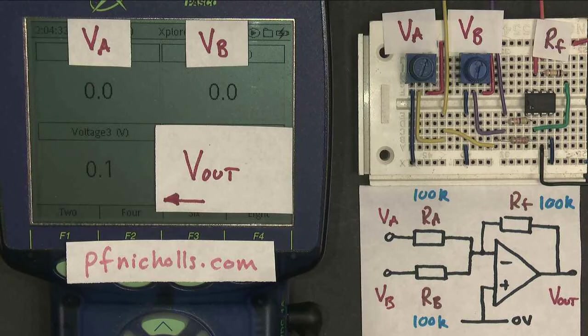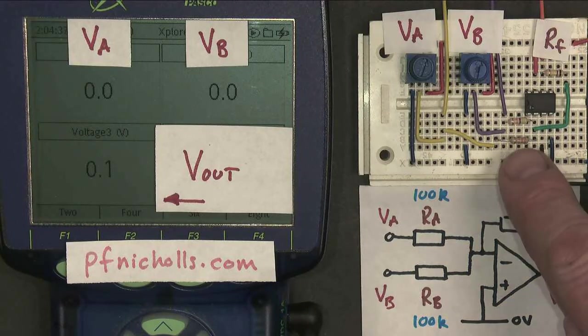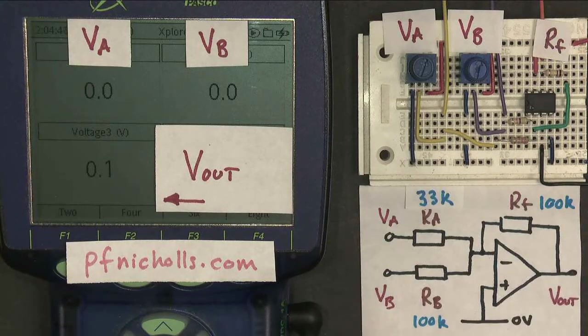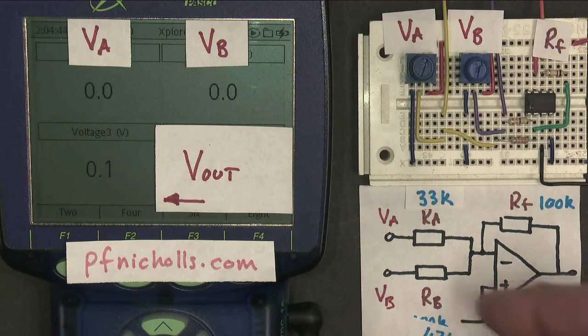Now, it's not necessary to use the same value resistors. So I've rebuilt my circuit. I've made Ra, sorry, 33k. There it is. I've made Rb, this one here, 47k. There it is.